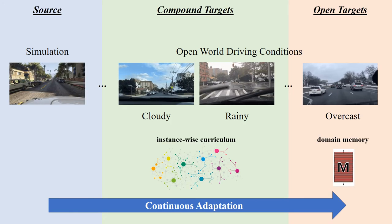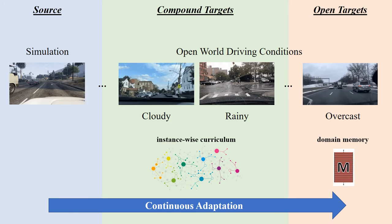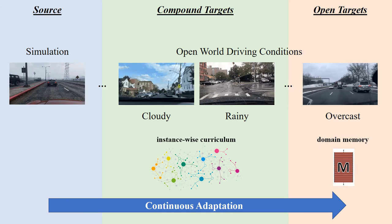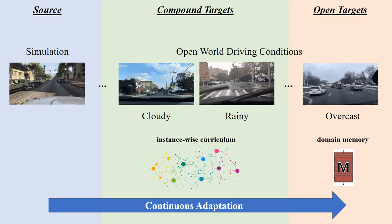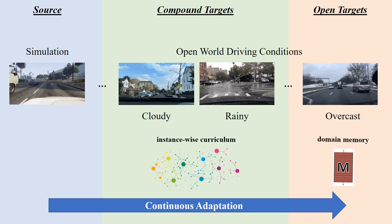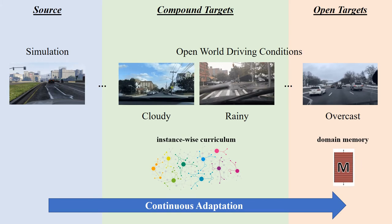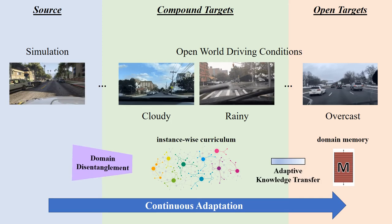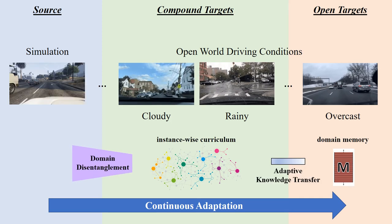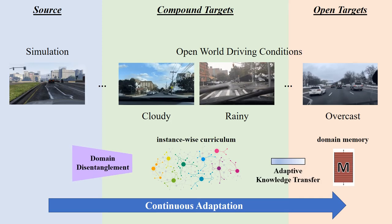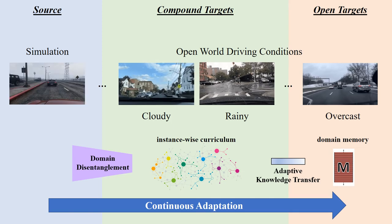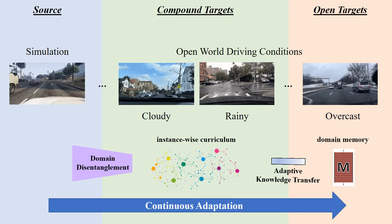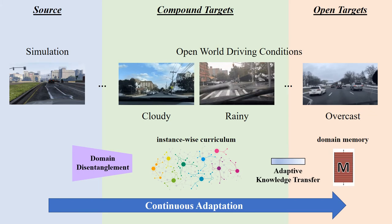We propose an instance-wise curriculum adaptation protocol for compound domains. We also construct a memory bank to utilize previous knowledge for open domains. We design a domain disentangle module to extract domain heterogeneity of each instance. We also learn an indicator to control knowledge transfer.